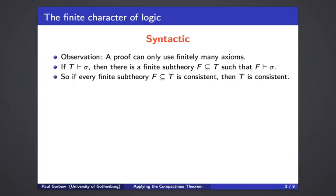A very important application of this is that if every finite sub-theory is consistent, then the whole theory is consistent. To see this: to be consistent means that there is no proof of a contradiction. So if there were a proof of a contradiction from T, then there must be a finite sub-theory where there is also a proof of a contradiction.